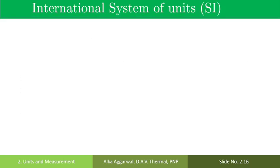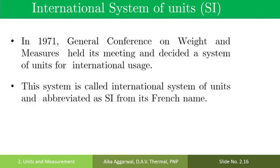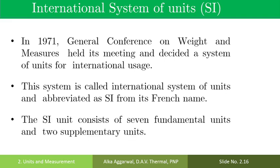The international system of units: In 1971, the General Conference on Weights and Measures held its meeting and decided a system of units for international usage. This system is called the International System of Units, abbreviated as SI from its French name. The SI unit consists of seven fundamental units and two supplemental units.